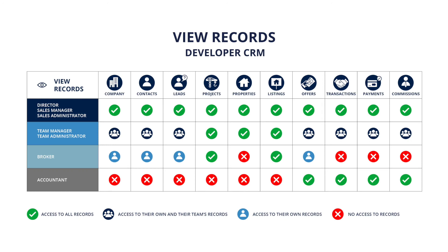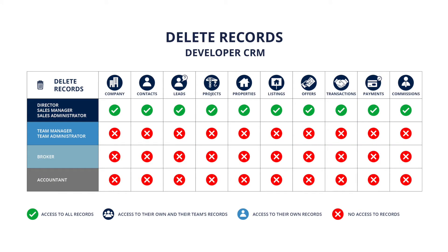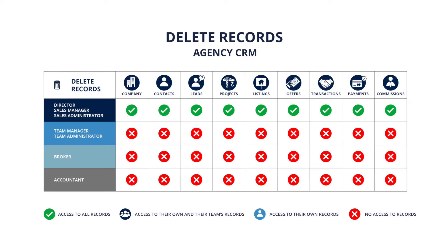All profiles have view and edit access for records owned by them. Team Managers and Administrators also have view and edit access to all records owned by members assigned to their team. The top level profiles — Directors, Sales Manager, and their Sales Administrator — have access to view and edit all records in the CRM. Deletion of records can only be done by the top tier of profiles: Director, Sales Manager, and Sales Administrator, to ensure that no data is lost accidentally or maliciously.